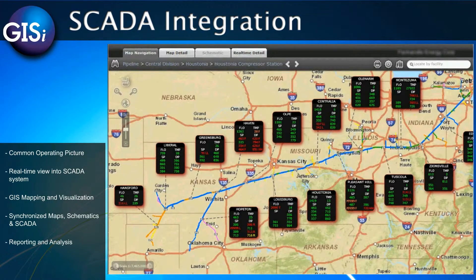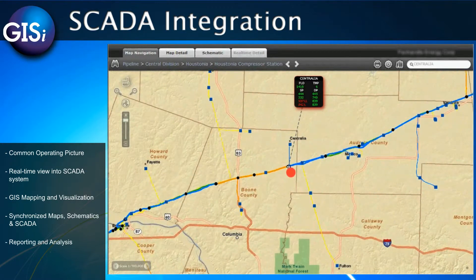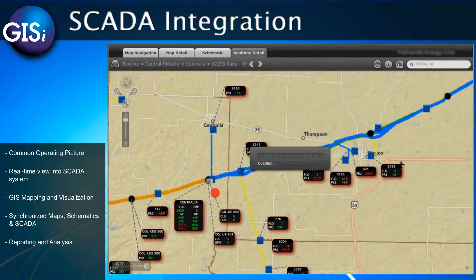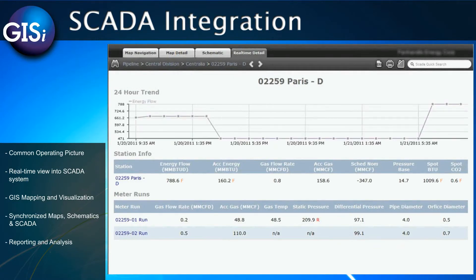A quick search tool gives me access to all the GIS data. I can simply start by typing the device name or number into the text field. A quick list is presented and I can select the device I'm interested in, and the system will automatically synchronize the different views of information. Map tips allow me to move my mouse over other types of devices and get a quick pop-up window into the SCADA system, as well as additional actions I can perform on this device, such as jumping to the schematics or showing the real-time detail screen for this particular device.